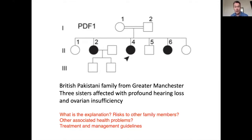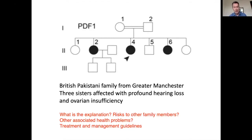Her sister, individual number four, started her periods as a teenager but they stopped at the age of 18. Their sister, number six, never started her periods at all and on investigation was shown to have no ovarian tissue whatsoever. This family came to us with questions: what was the explanation for their health problems, what were the risks to other family members, were there other things to look out for, and what was the most appropriate treatment? This exemplifies how we drive forward research from the families we see in our clinics.